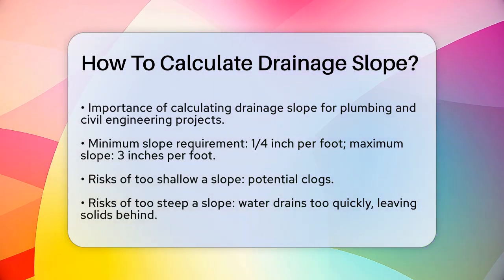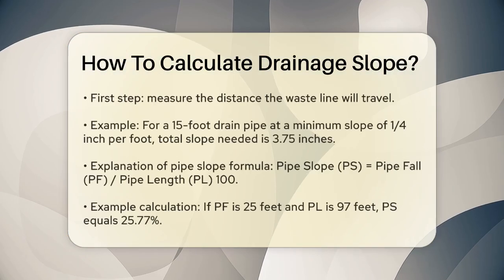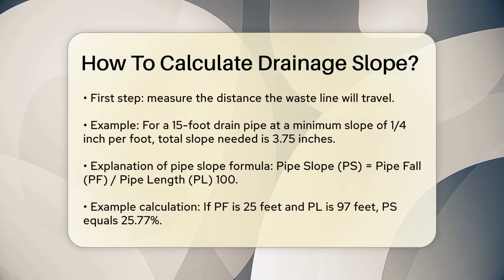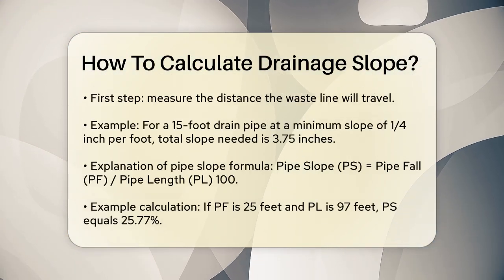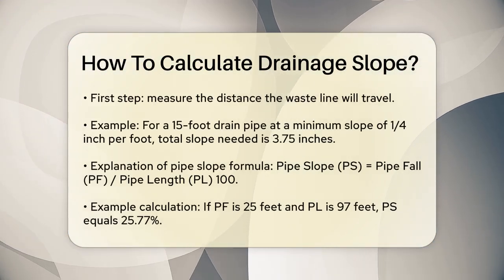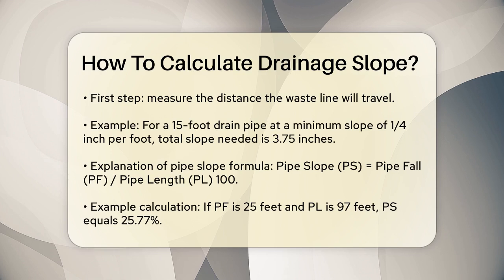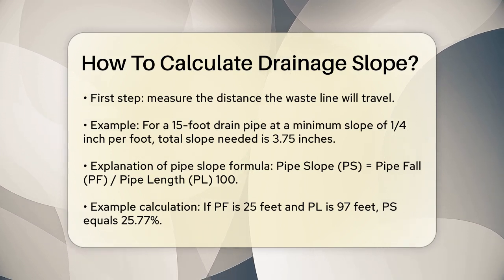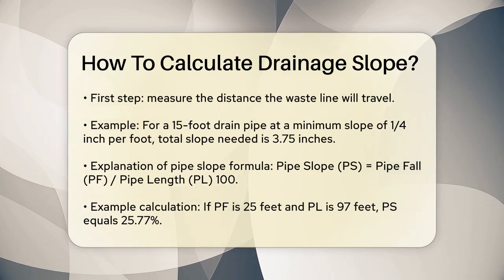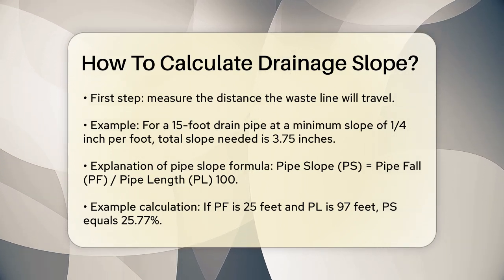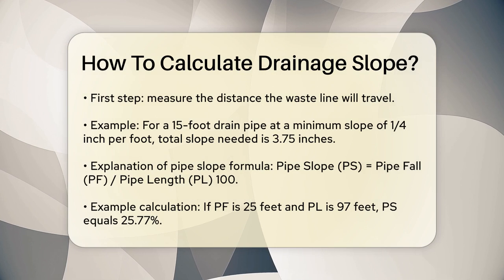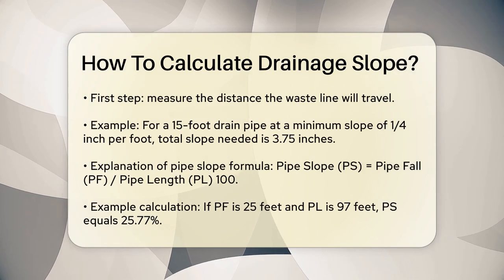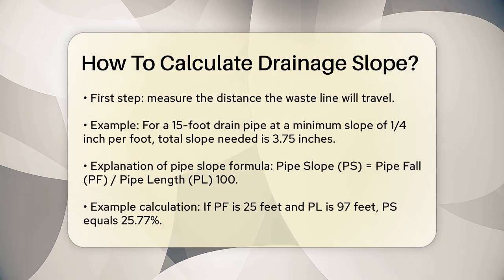To start, you need to measure the distance the waste line will travel. This can be tricky, especially if the line is not in an easily accessible location, but it's essential for your calculations. Once you have the total length of the drain pipe, you can proceed to calculate the slope.